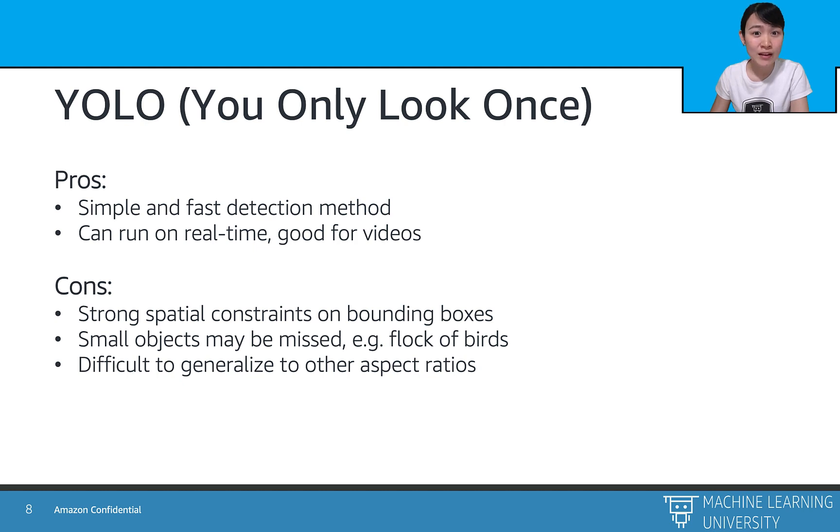However, it has some drawbacks as well. Because of the spatial constraints of the grid cell, the bounding boxes are limited to certain cell locations. Also, small objects that are close to each other may be missed, such as a flock of birds. What's more, it is difficult to generalize a pre-trained model to other aspect ratios of objects.